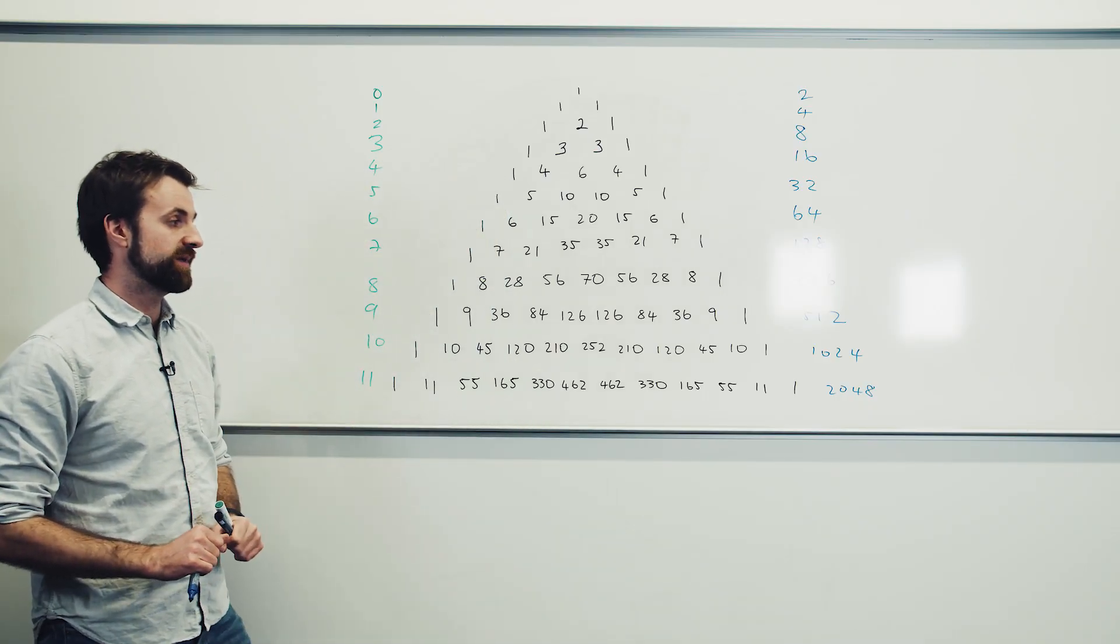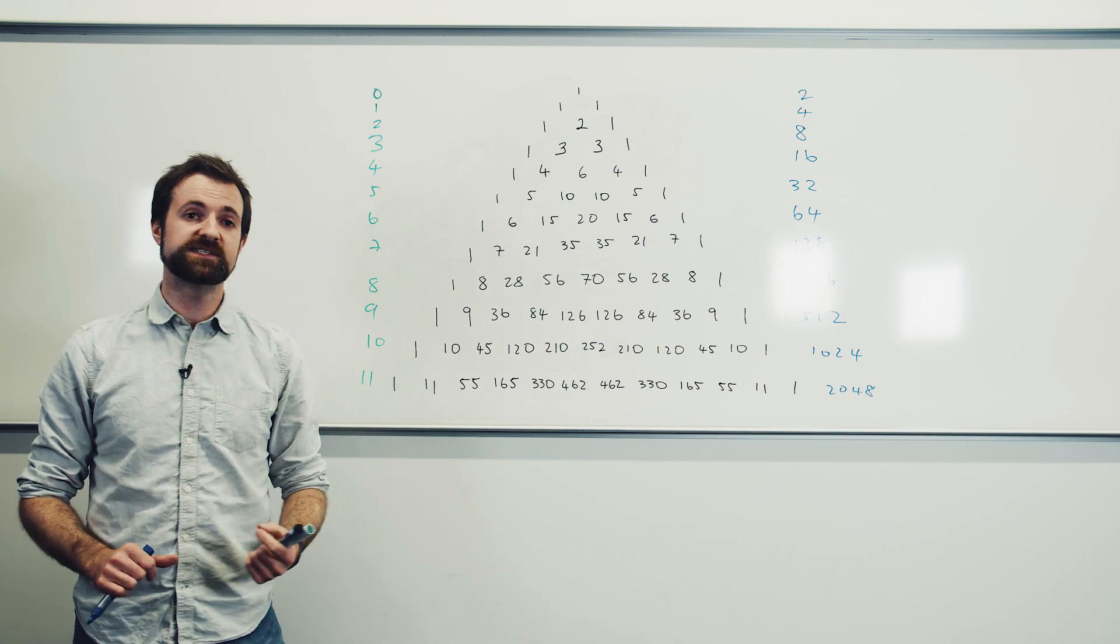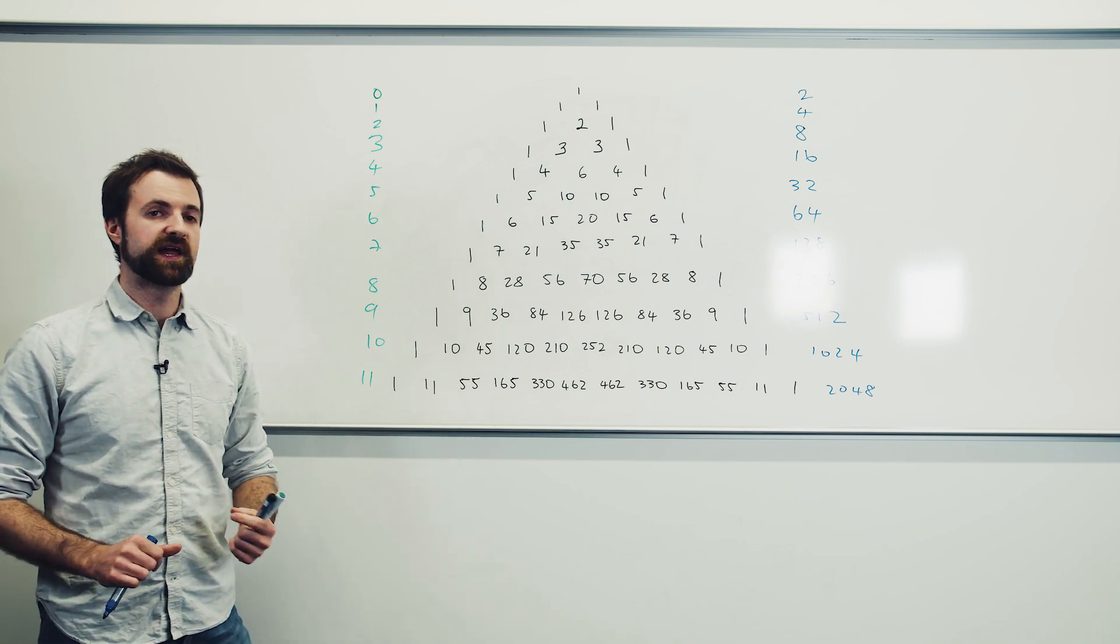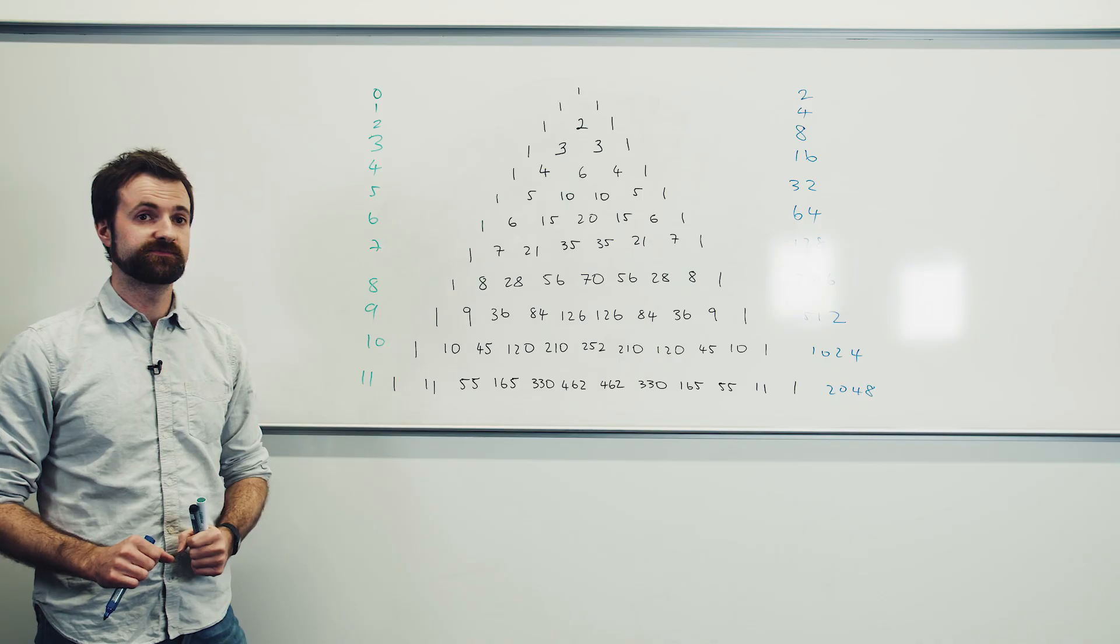And I divide four hundred and sixty-two by two thousand and forty-eight to find the probability that an individual ball will land in a given bin. Roughly a quarter of the time, and if I add both of those middle bins together, then it's roughly half the time I'd expect to find a bead in one of these middle two bins.